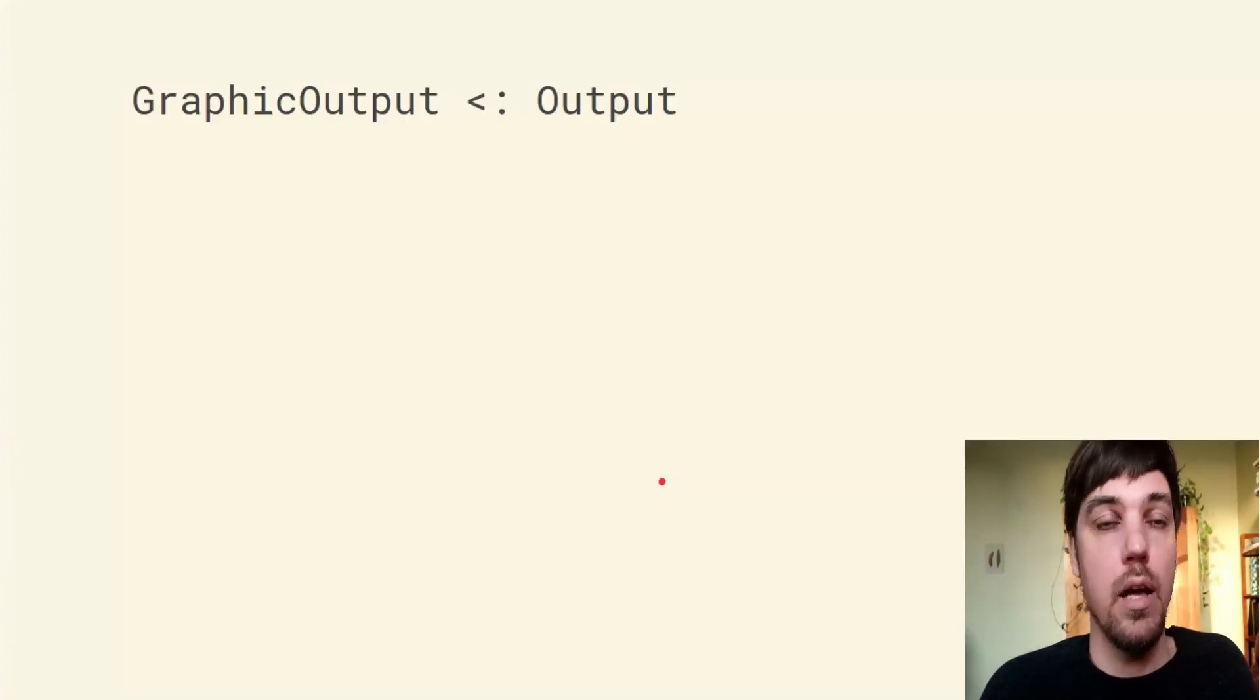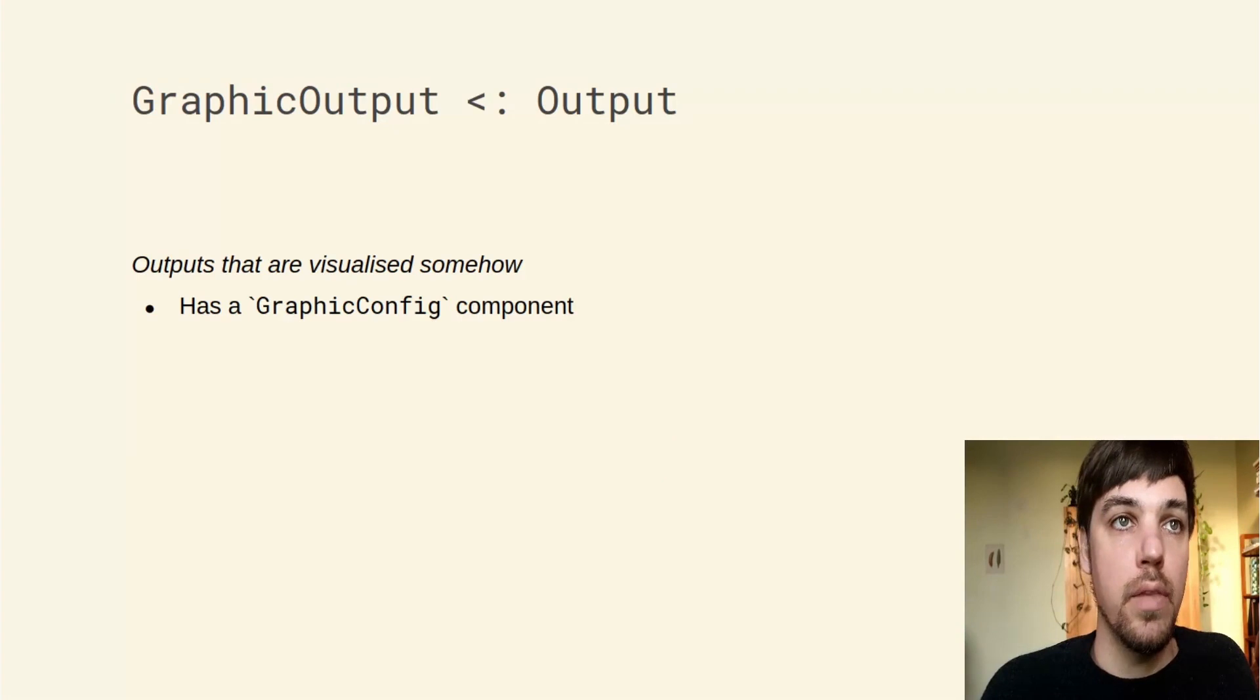The next kind of output is a graphic output. These are outputs that are visualized somehow. They need a graphic config component, which determines the frames per second and things like that for visualization. They also need to provide a show frame method where the frame is actually showed.